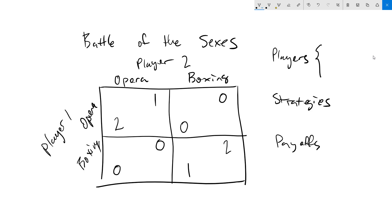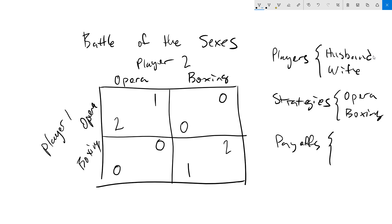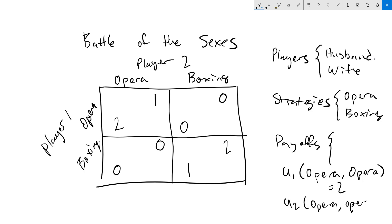Looking at it from our game theory framework, we've got two players again — our husband and wife. Our strategies are going to involve some combination of going to opera or boxing, and our payoffs are given by our chart — our normal form game matrix. For example, the utility for player one of opera-opera is two, and player two's utility for opera-opera is one. We can go through all the different combinations for each player and combination of actions to get our utilities, and that's going to be what our payoffs for this game are.